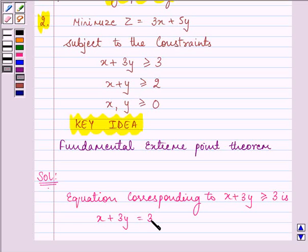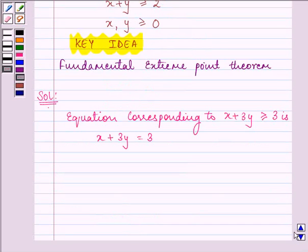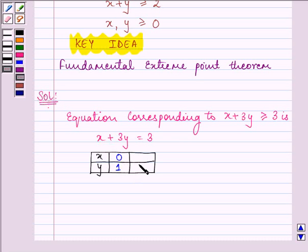The points lying on it are given by - let us find out two points that will satisfy this line. When we substitute x as 0, we have the value of y as 1, whereas when we substitute the value of y as 0, we have the value of x as 3.